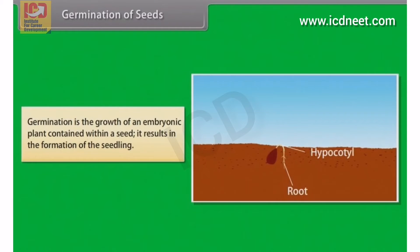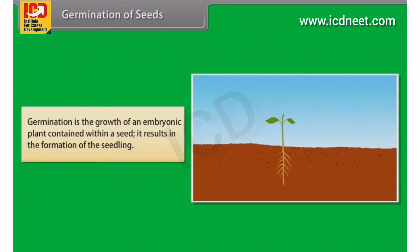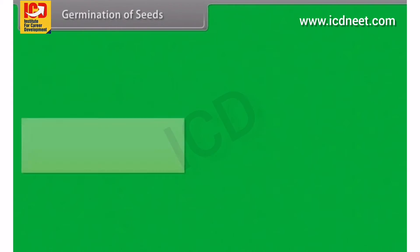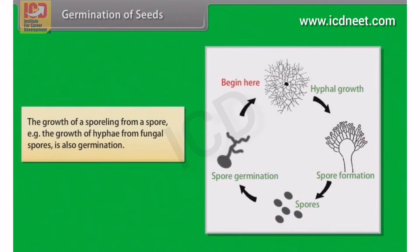Germination is the growth of an embryonic plant contained within a seed, resulting in the formation of the seedling. Fully developed seeds contain an embryo and, in most plant species, some store of food reserves wrapped in a seed coat. The growth of a sporeling from a spore — for example, the growth of hyphae from fungal spores — is also germination.